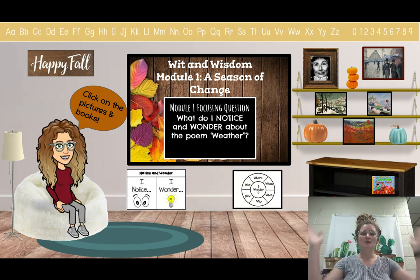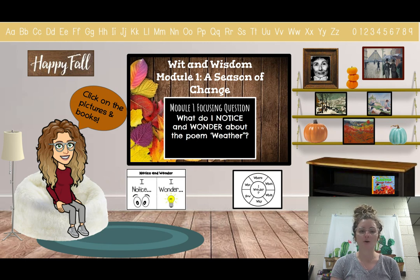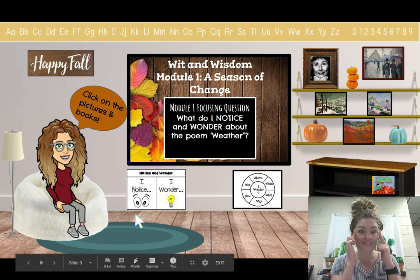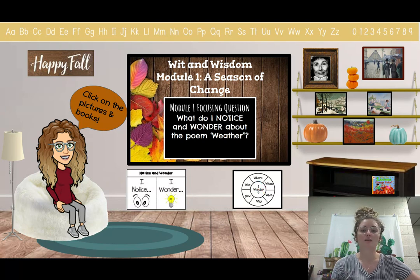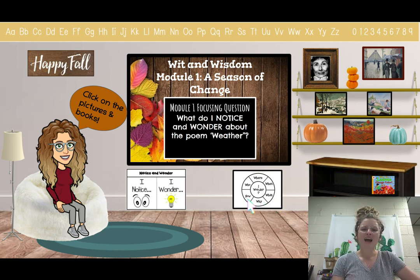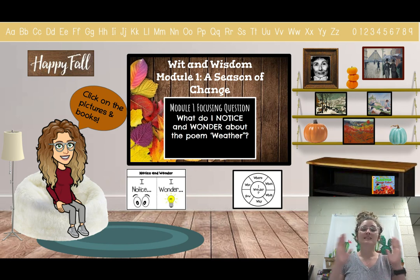Now we have a pizza slice. We're taking a slice out of that pizza — we have to take bites at a time. Our pizza slice question is: what do I notice and wonder? If I notice, that means I am seeing. If I am wondering, that means I am asking questions — with question words like where, when, what, why, how, or who. We are going to be noticing and wondering in a poem called Weather. This entire lesson is about noticing and wondering.